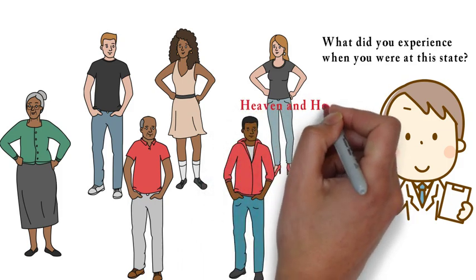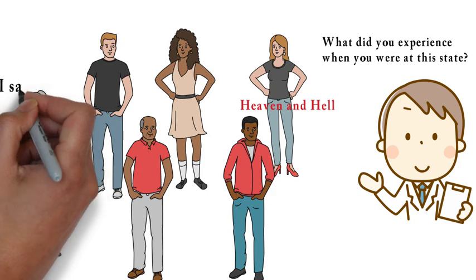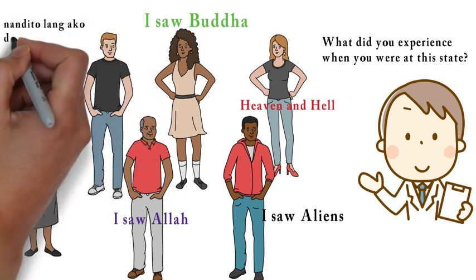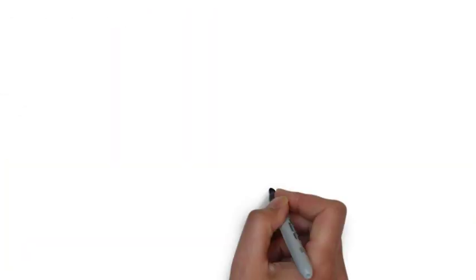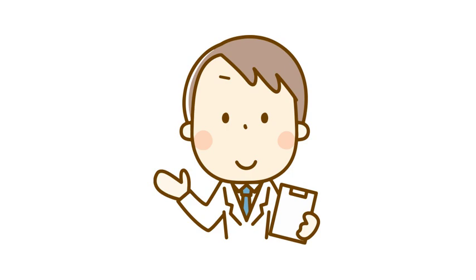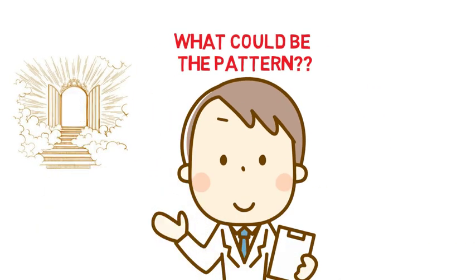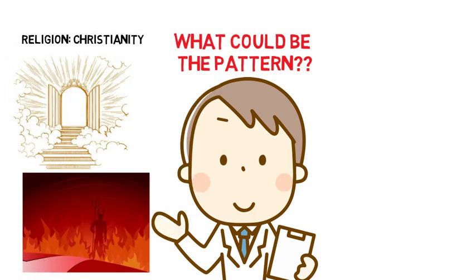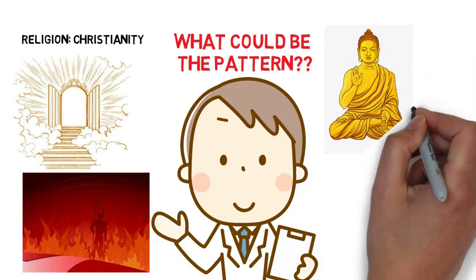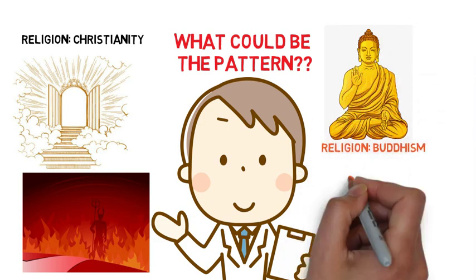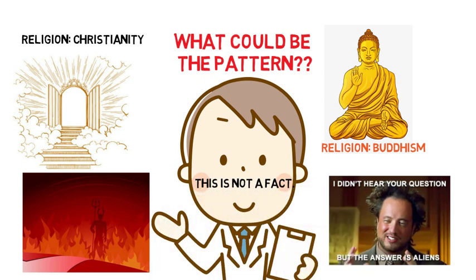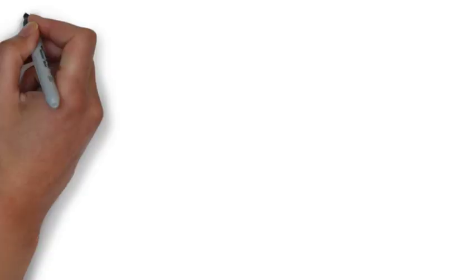Maybe some of the subjects will say that they saw heaven and hell. Some may even say that they saw God, Buddha, Allah, aliens, and so on. After the interview is done, the psychologist will look at all the answers of their subjects and try to look at a pattern. Maybe those people who saw hell, heaven, and God may have the same religion, such as Christianity. And maybe those people naman who saw Buddha may have a religion of Buddhism. So the researcher may conclude that whatever you will see on your near-death experience will be based on your religion. But class, this is just an example — this is not a fact. But I hope you get the point.